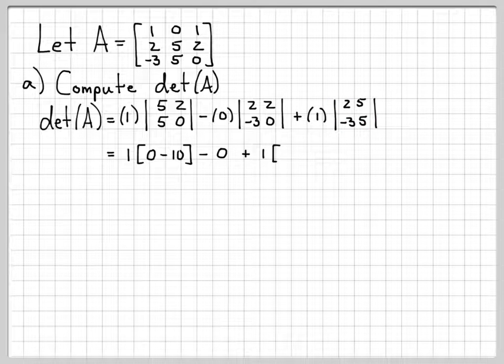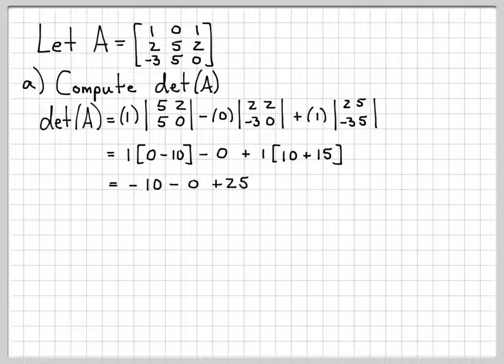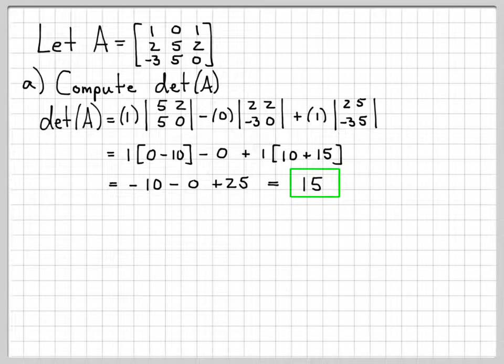So minus minus makes it plus 15. And then if we just simplify a little bit, we get -10 - 0 + 25, which all simplifies down to 15. So we have computed the determinant of the matrix A.